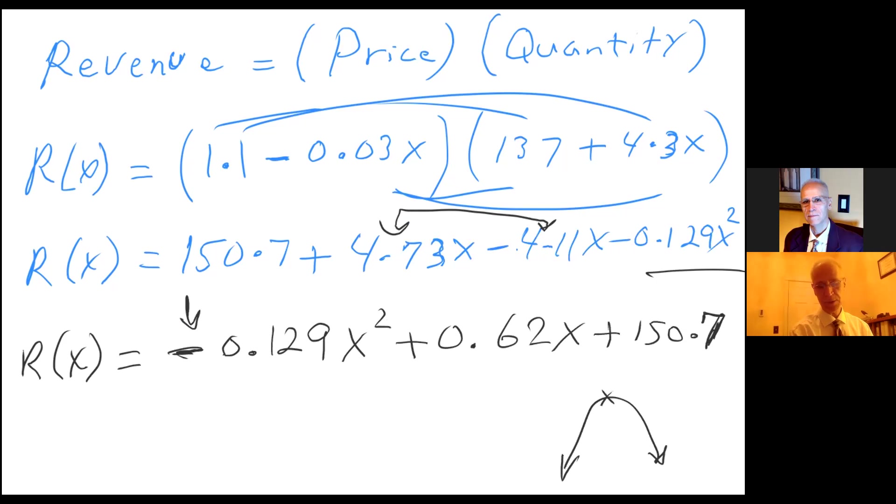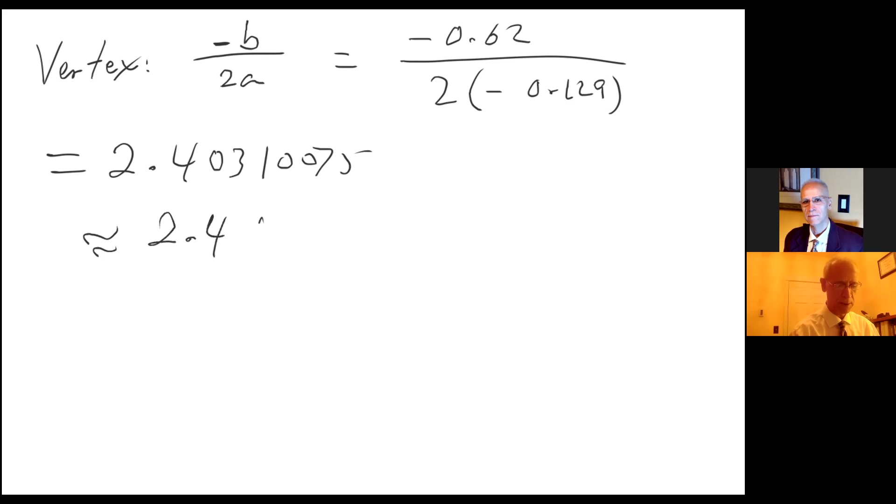So let me go ahead and find the vertex. For the vertex I have -b/2a, so -0.62 over 2 times -0.129. Negative and negative cancels out. If I put this in my calculator I get 2.40310075, so let's say 2.4 weeks. Remember that we were told to round to one decimal.